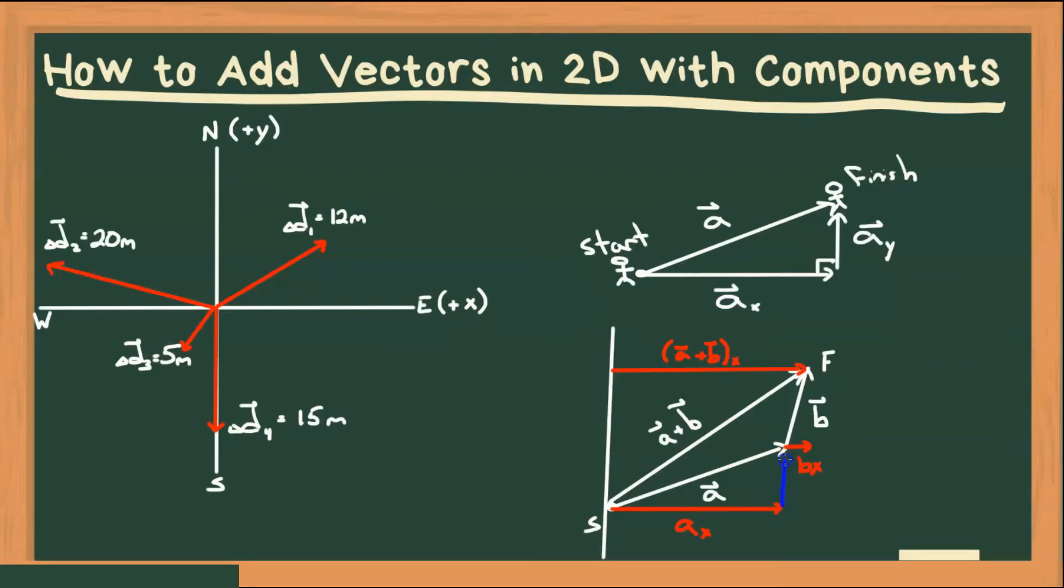What about Y components? Well, this would be here, AY. And this here would be BY. And if I completely add AY plus BY, what I would get would be the Y component of that vector A plus B Y.